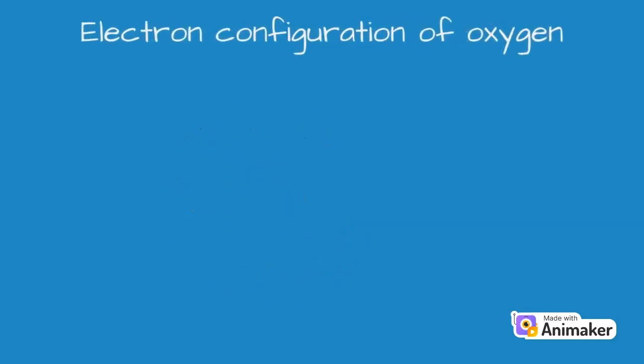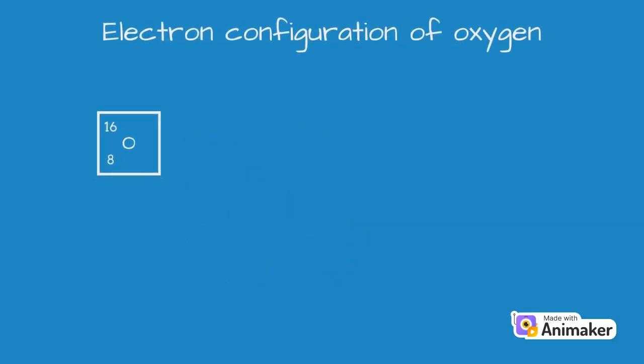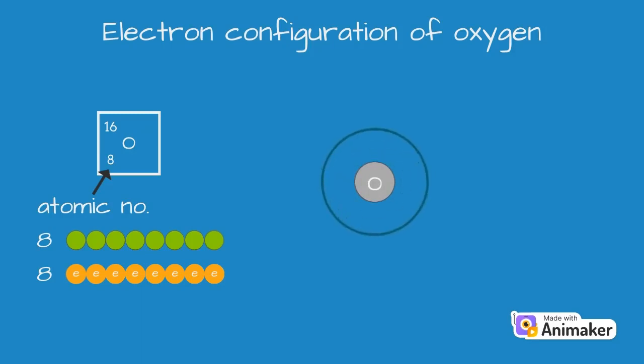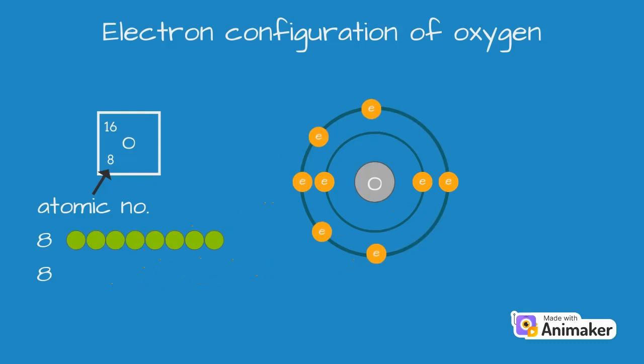Let's start by drawing the electron configuration of oxygen. Since oxygen has an atomic number of 8, it has 8 protons and 8 electrons. These electrons will be arranged in shells around the nucleus in a stepwise manner. The first shell to fill is the one closest to the nucleus as it has the lowest energy level. The first shell can accommodate only 2 electrons, so the first 2 electrons will fill the first shell. Next, the second shell can accommodate a maximum of 8 electrons, but only 6 electrons are left, so all 6 electrons will go to the second shell.